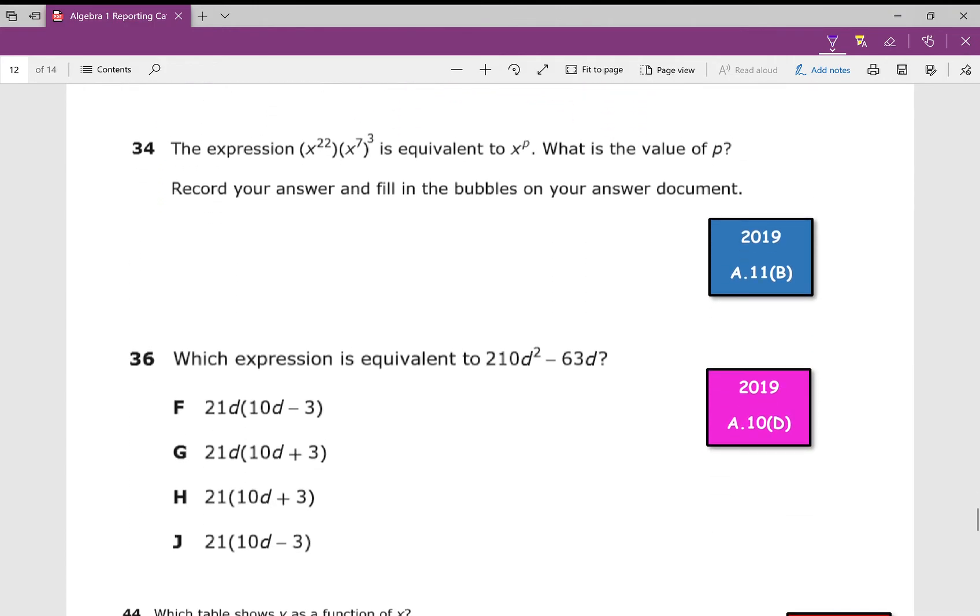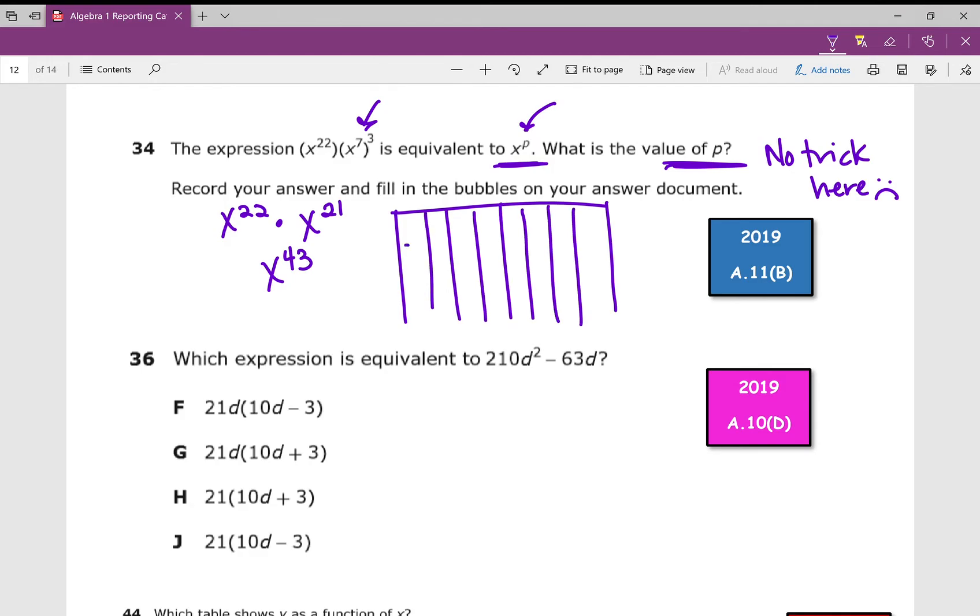Looking at number 34. The expression x^22 times x^7 all raised to the power of 3 is equivalent to x^p. What's the value of p? There's no trick here. You have to know your exponent rules. So what do we do? The first thing we're going to do is apply our power rule. x^22 times x^(7×3 = 21). Now we're going to apply our product rule. What do we do with our exponents when we're multiplying? We add them. 22 plus 21 is 43. What's the value of p? Well p is the exponent. So my answer is 43. In my grid, I'm going to do a positive and a negative, and my answer is 43. If I want, I can put a positive, but I don't have to. I absolutely have to if it's negative.